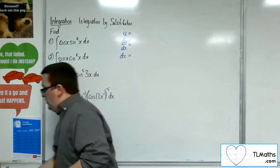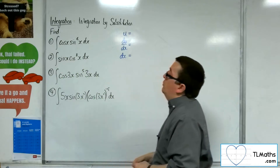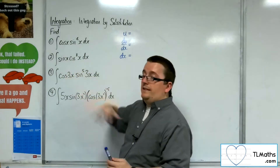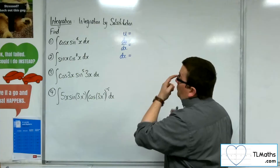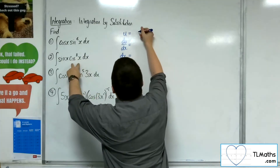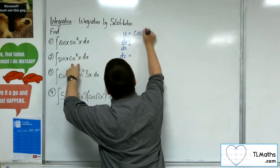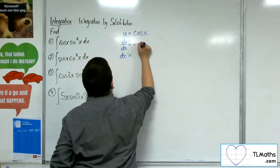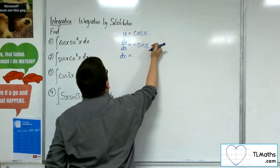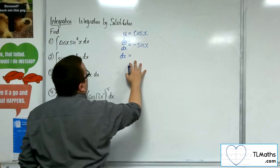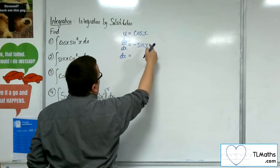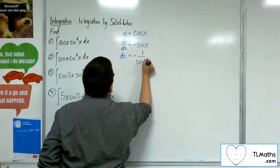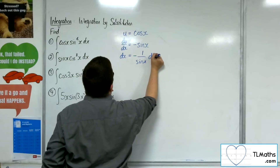So number two, we've got the integral of sine of x times cosine to the 8x dx. So the u this time will be the cosine of x — that's what's causing the problem. And we differentiate that to get minus sine x. Then we rearrange this to get dx: multiplying up by the dx and dividing both sides by minus sine x, we're going to get minus 1 over sine x du.